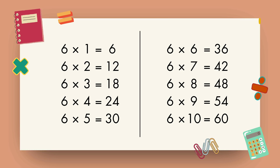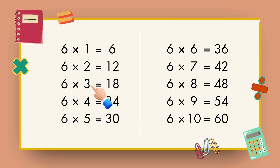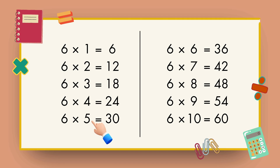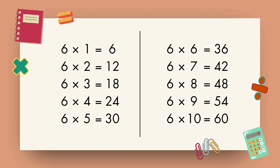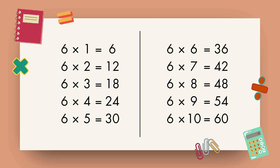Let's repeat. 6 1s are 6, 6 2s are 12, 6 3s are 18, 6 4s are 24, 6 5s are 30, 6 6s are 36, 6 7s are 42, 6 8s are 48, 6 9s are 54, 6 10s are 60.